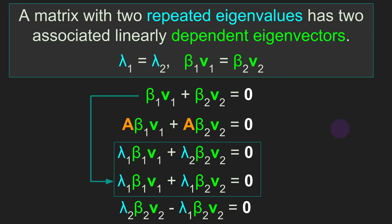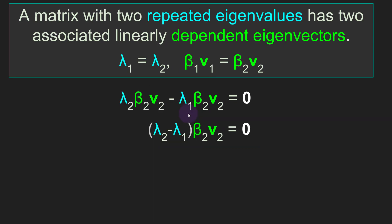Let's begin by working through the same proof from the previous video and see what happens. The only thing that we change here is our assumption. In the previous video we assumed the matrix had two distinct eigenvalues, and now here we are assuming the matrix has two repeated or identical eigenvalues — so lambda 1 equals lambda 2. I just want to get to the stage where we drew the conclusion that beta 2 must be equal to zero.